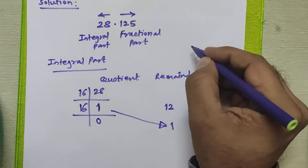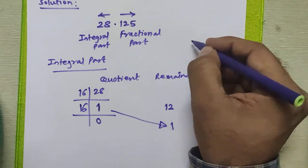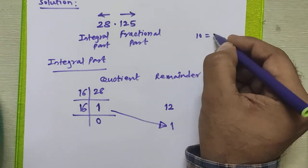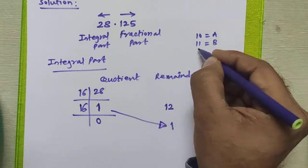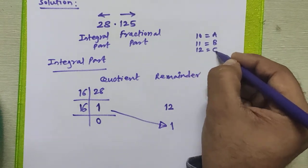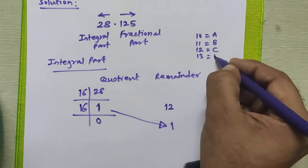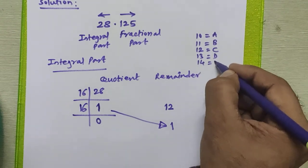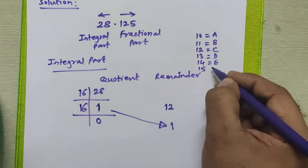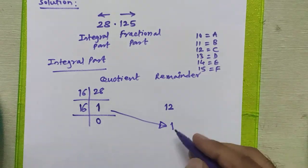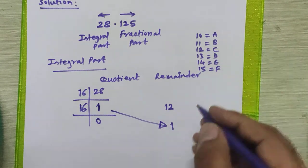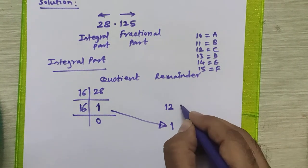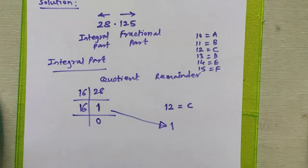The digits go from 0 to 9, and then for 10 we have alphabet A, for 11 we have alphabet B, for 12 we have alphabet C, 13 is D, 14 is E, and 15 is F. So this 12 is C.